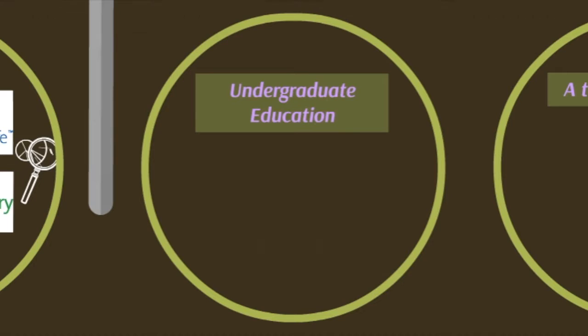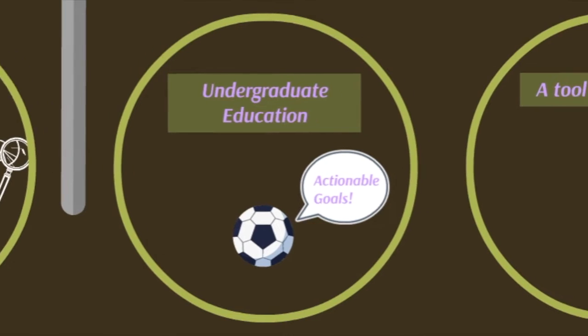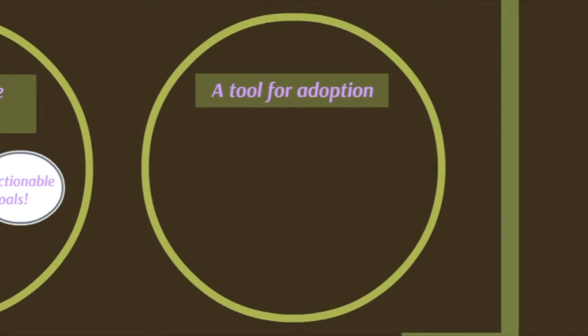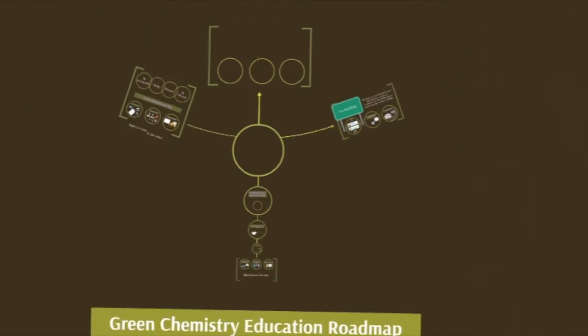One of the many outcomes of this roadmap is to provide actionable goals for incorporating green chemistry into undergraduate chemistry education. It will serve as a tool to enable and promote greater adoption of green chemistry in educational, governmental, and industrial settings. It will also identify key projects and provide a context and framework that helps to guide the execution of those projects.